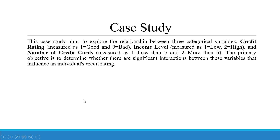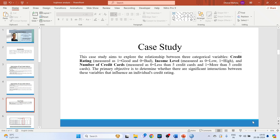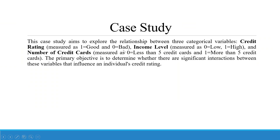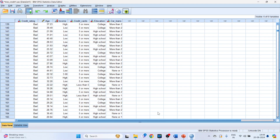We'll take one case study that aims to explore the relationship between three categorical variables: credit rating (one is good, zero is bad), income level (zero is low, one is high), and number of credit cards (zero is less than five cards, one is more than five cards). The primary objective is to determine whether there are significant interactions between these variables that influence an individual's credit rating.